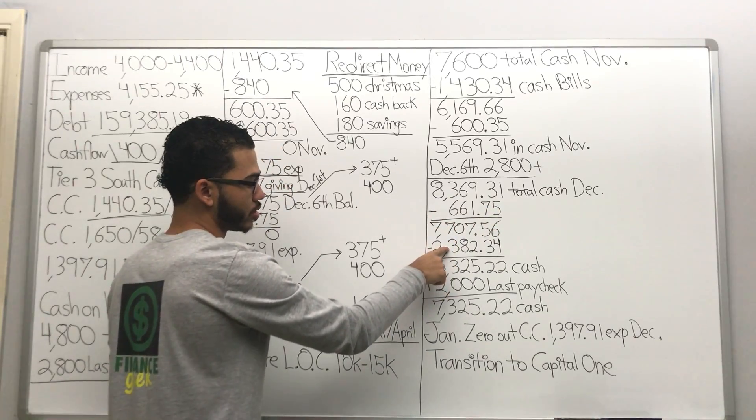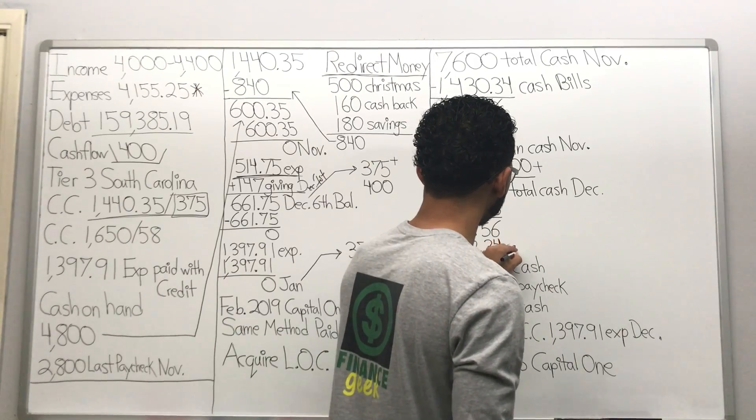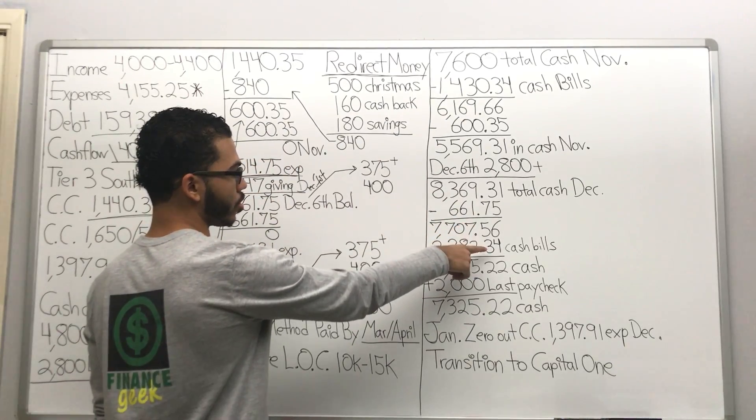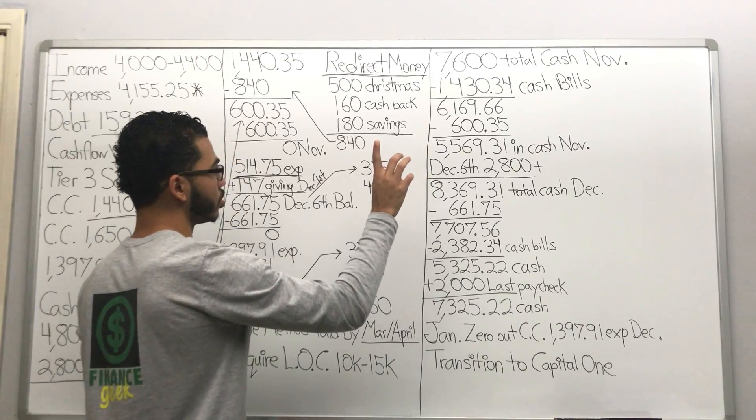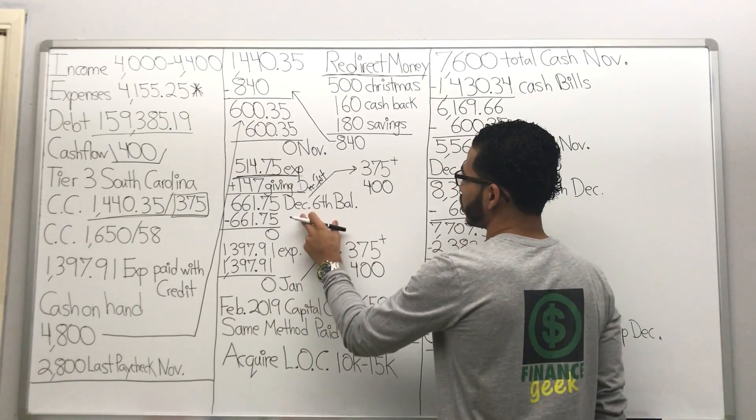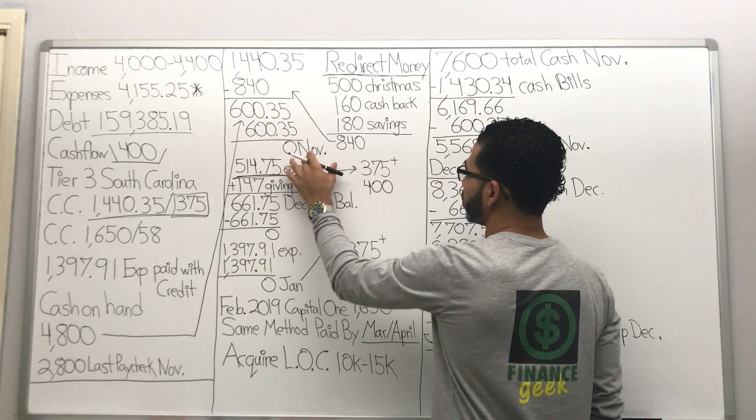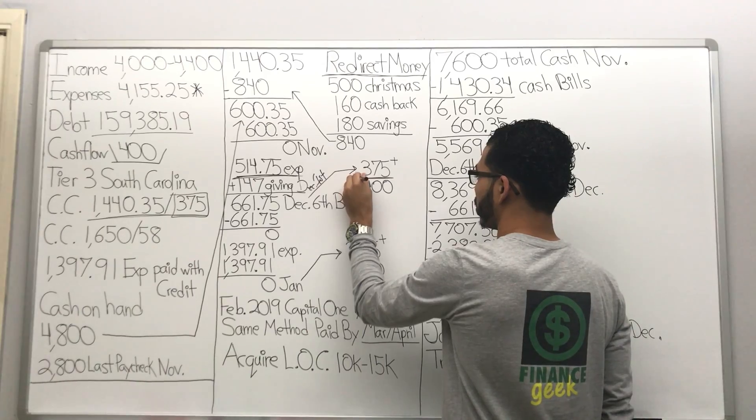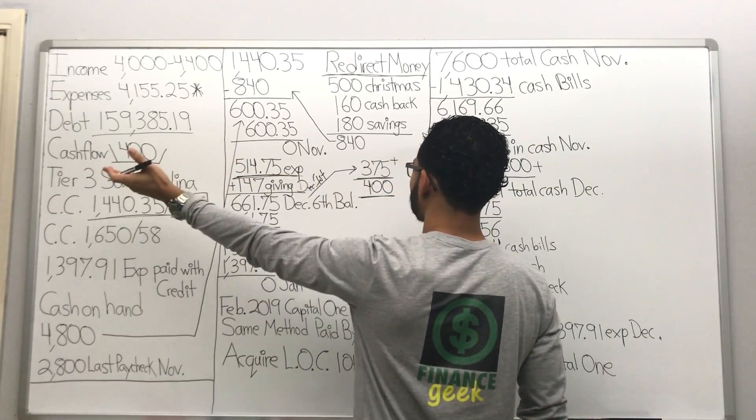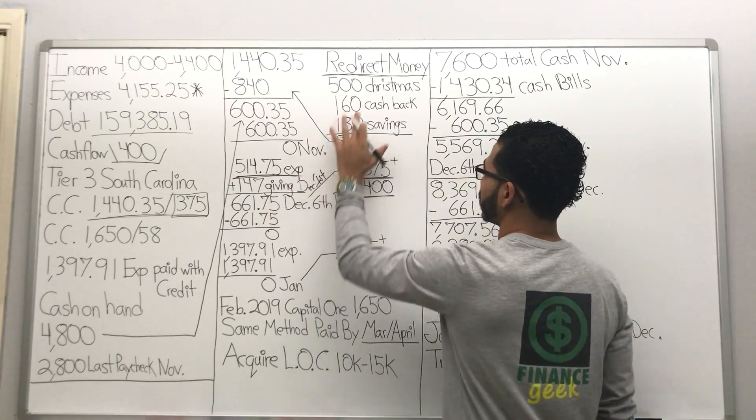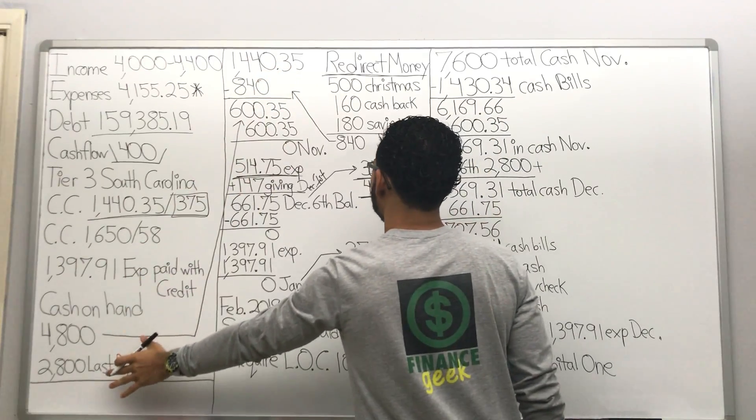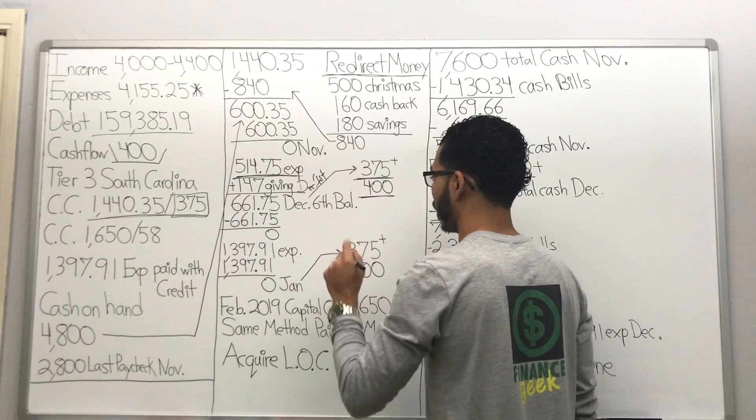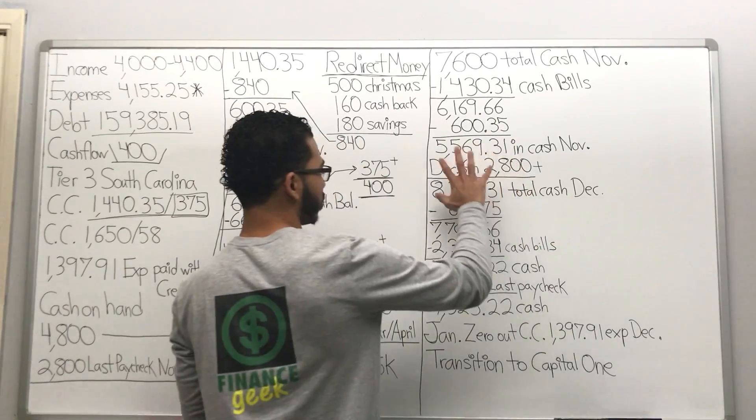Now cash bills, right here, this is cash bills for the month of December, $2,382.34. Mind you, for the month of November and December, I'm gonna have a cash flow increase of $375. I'm gonna have my $400 original cash flow hasn't gotten used just yet because it got redirected with this money right here, plus the money I already had on hand. So I've got that going on. Now coming over here, we're in December.